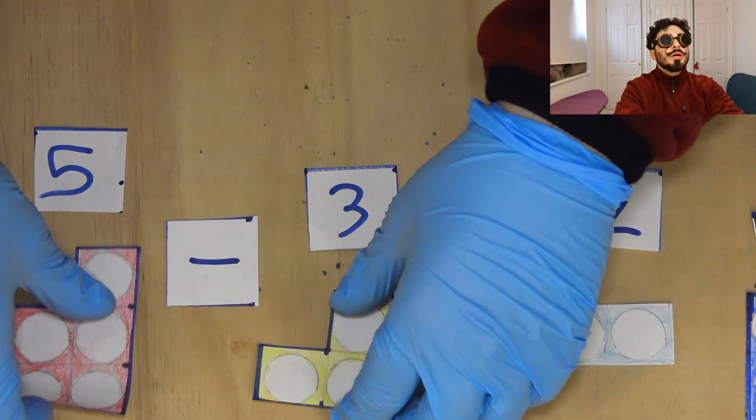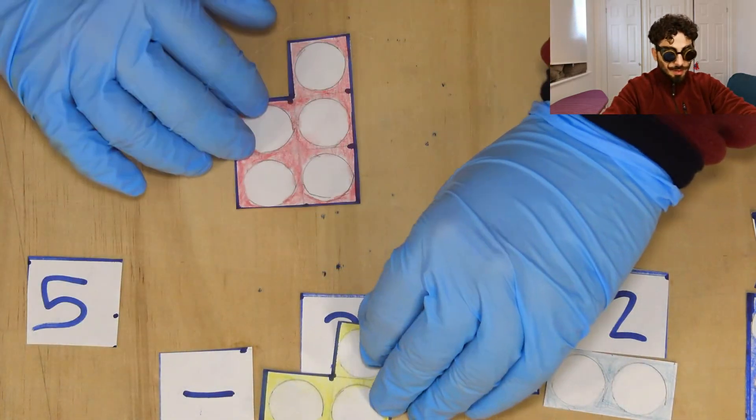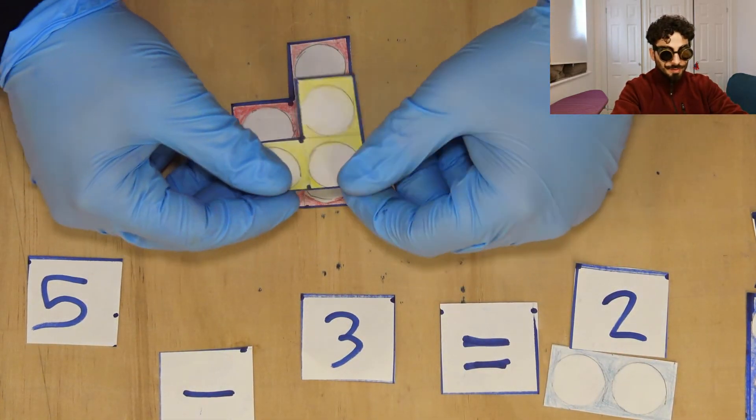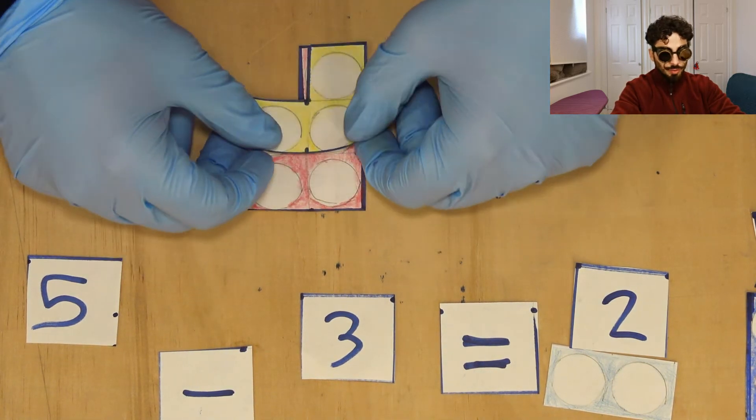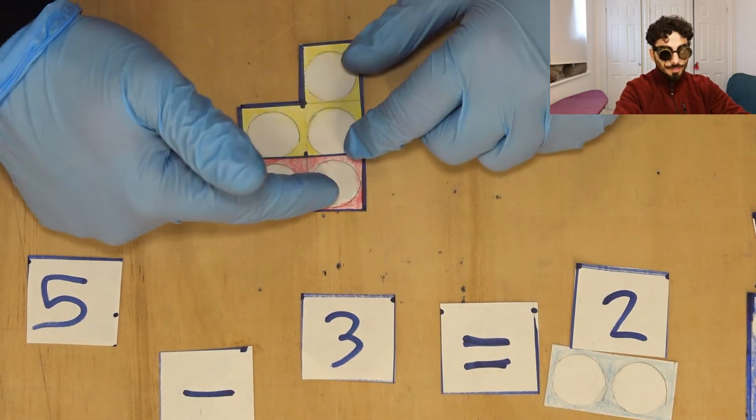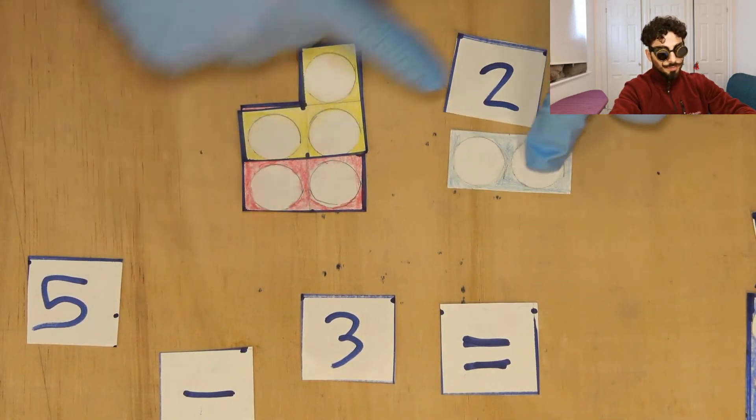How do we do that? If we move these down, five, and then take away three, so we just cover up our number, you can do it like that or like that, and you're left with two and your answer is two.